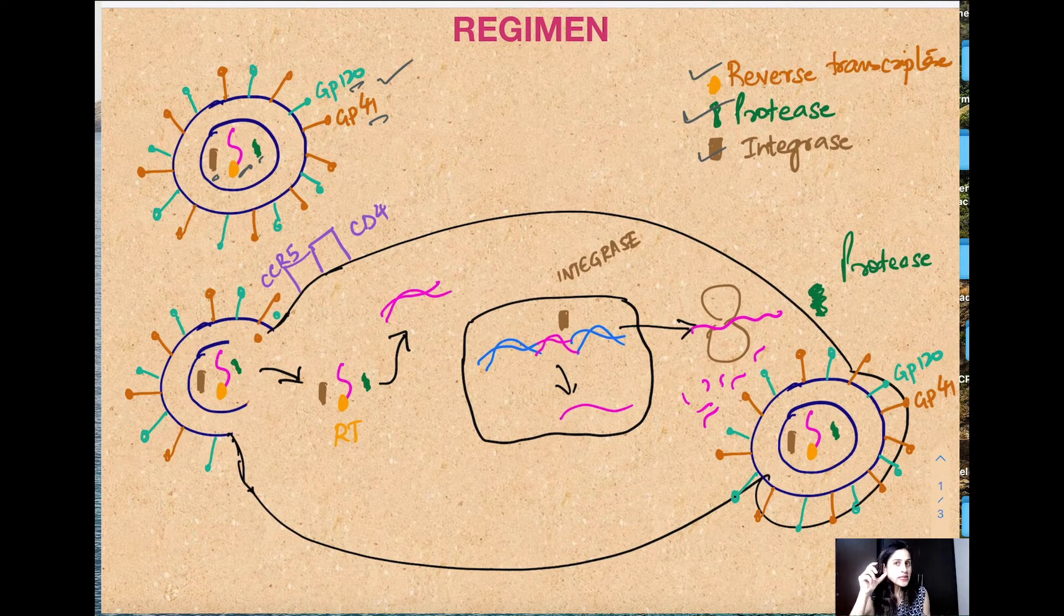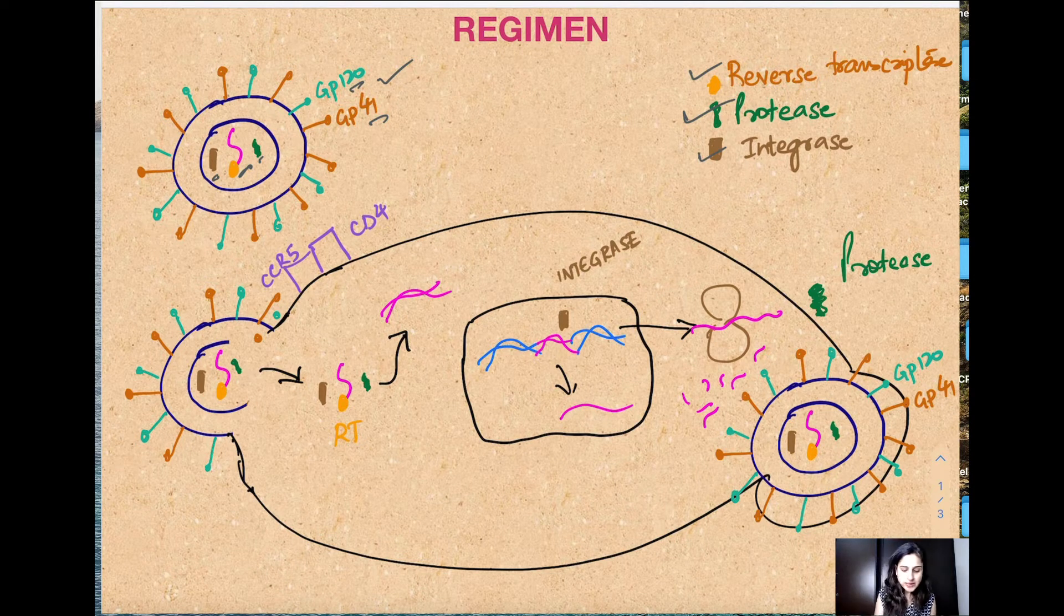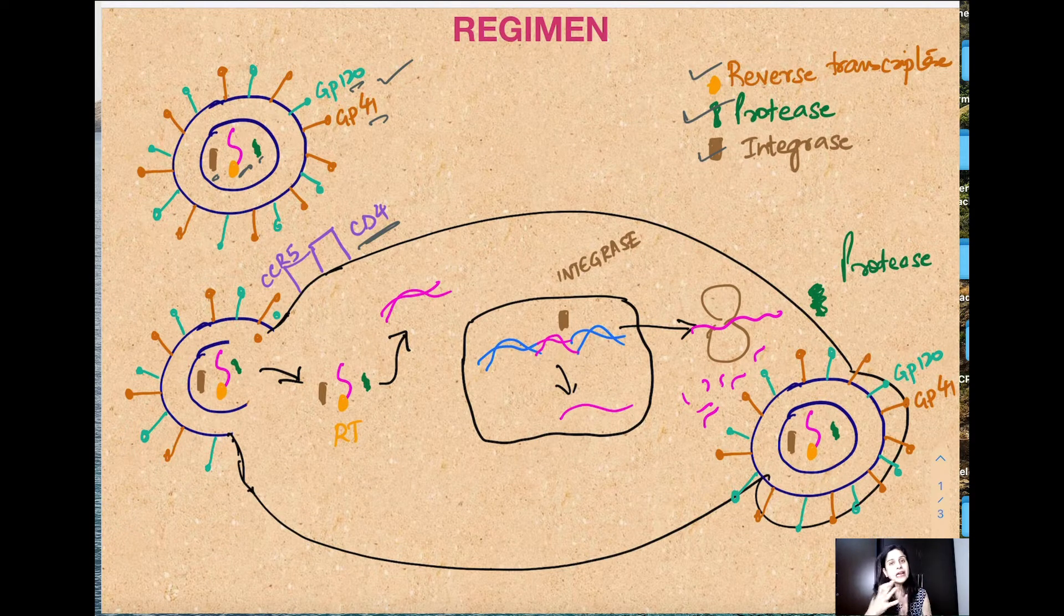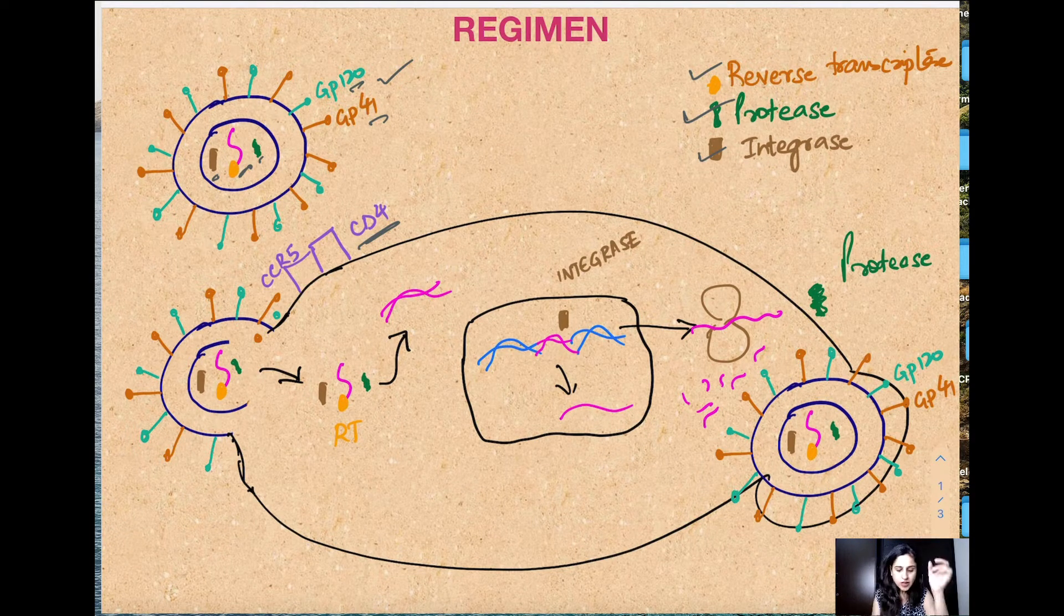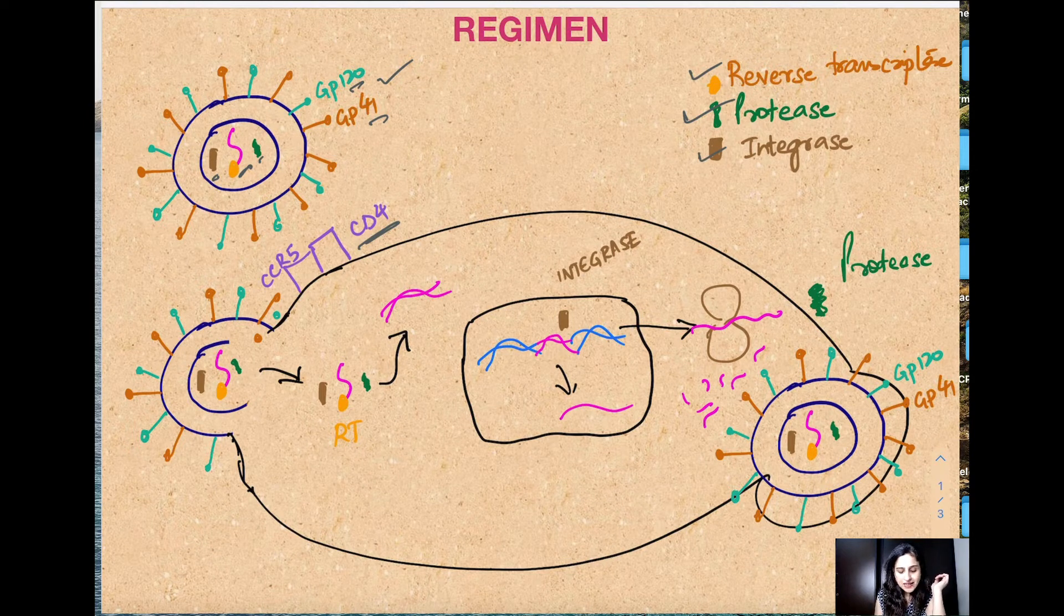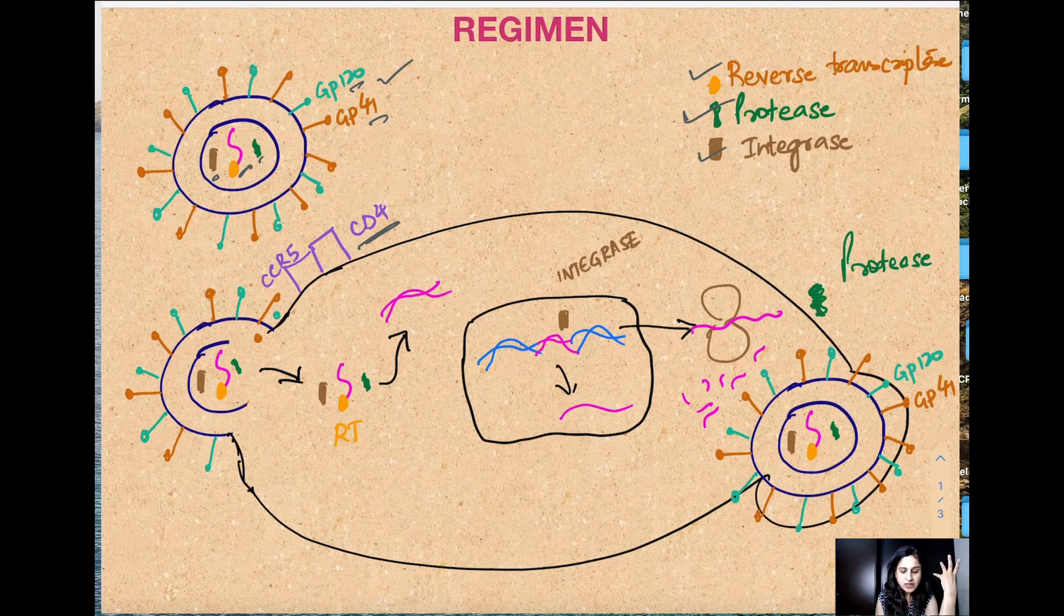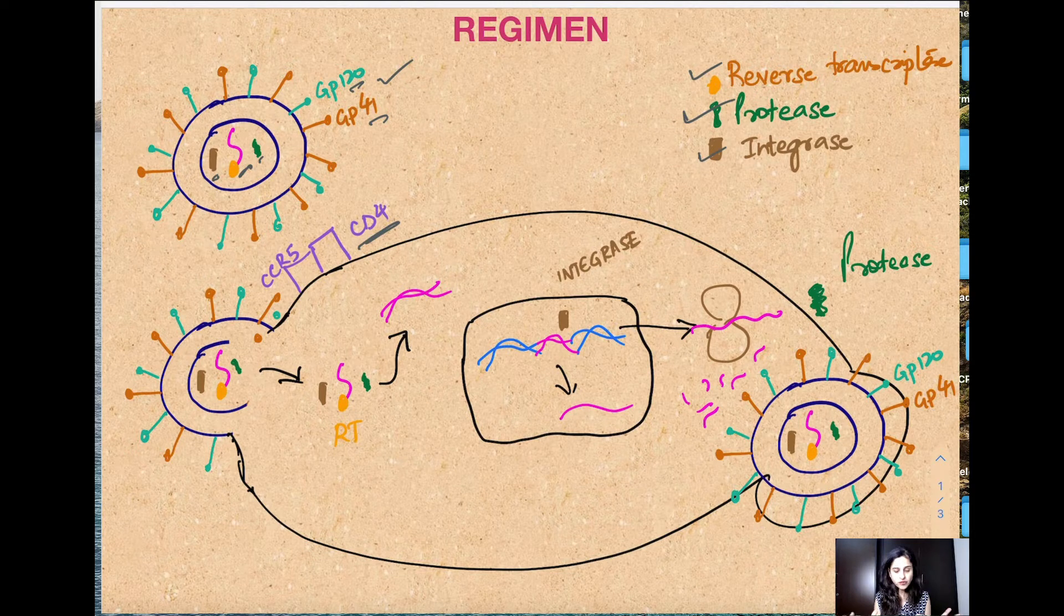These HIV viruses attack cells that are CD4 positive, meaning cells which have a special CD4 type receptor on their surface. They only attack those cells, so these cells are your most prime target. This is your CD4 with a chemokine receptor attached.